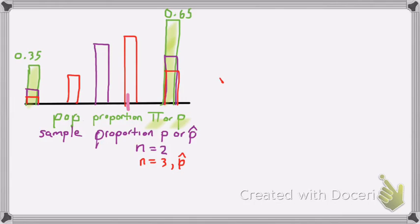The other one, though, some other books, instead of using pi for population and P for sample, as your book does, they use a P for population and a P hat for sample.